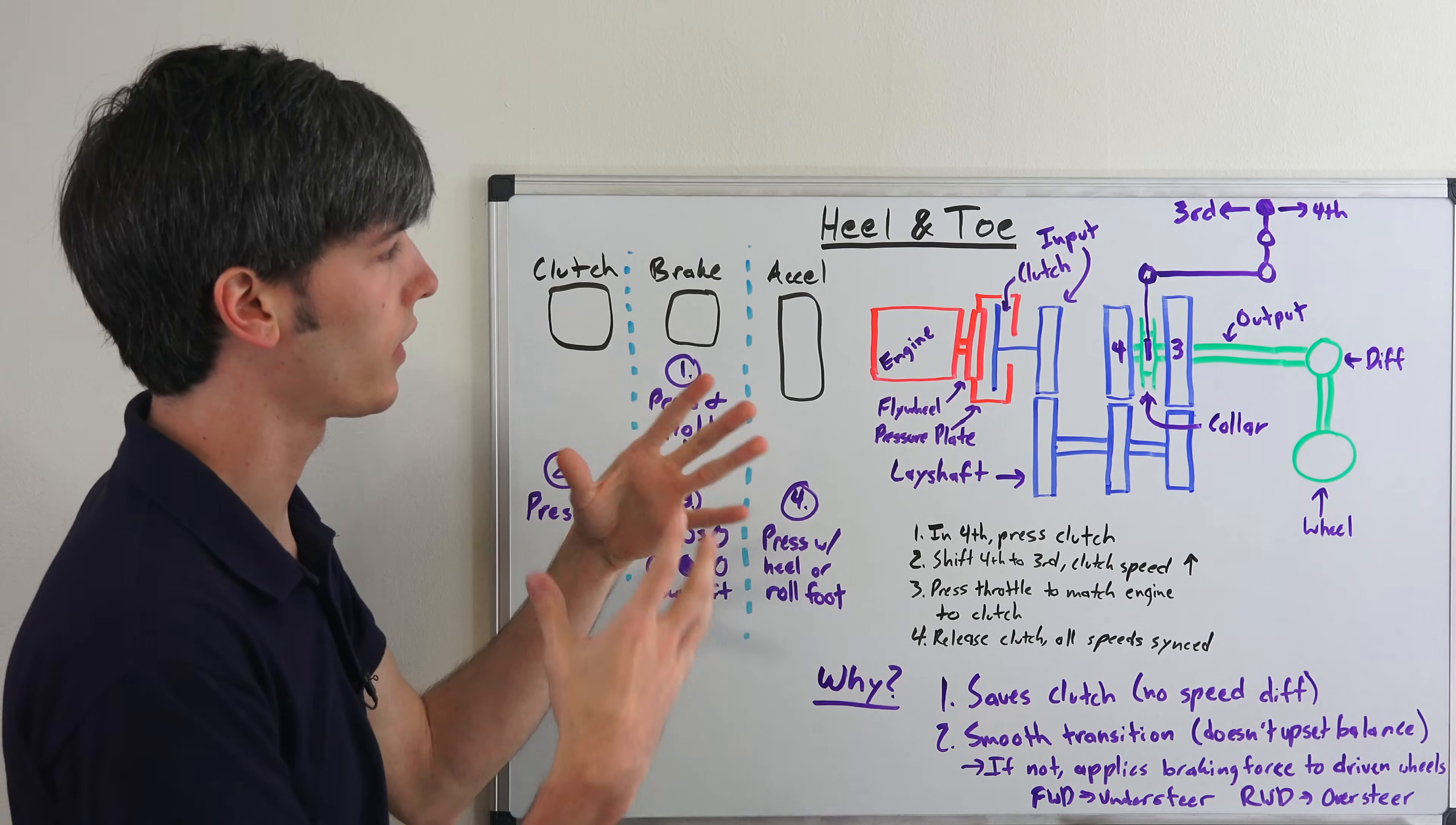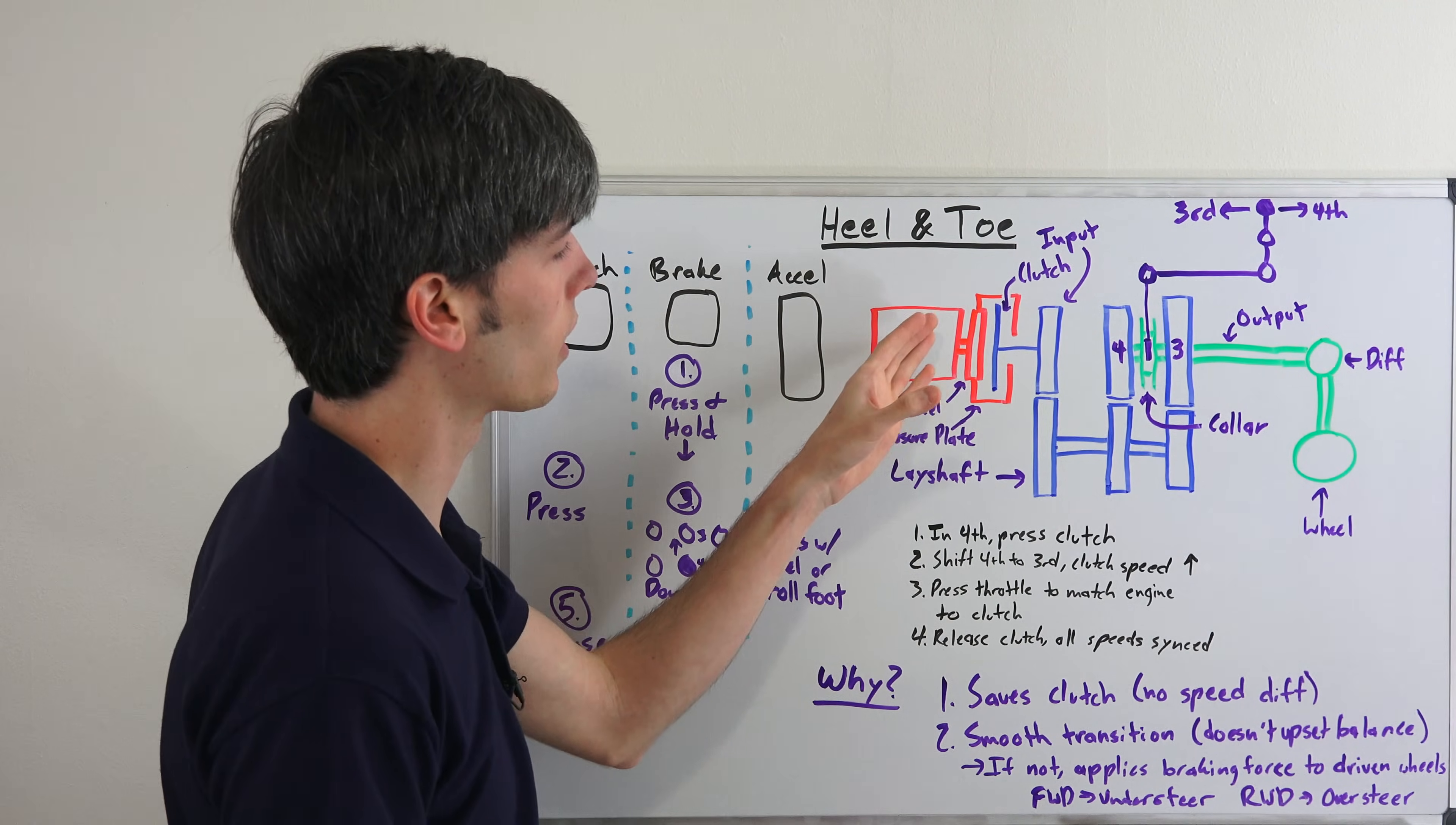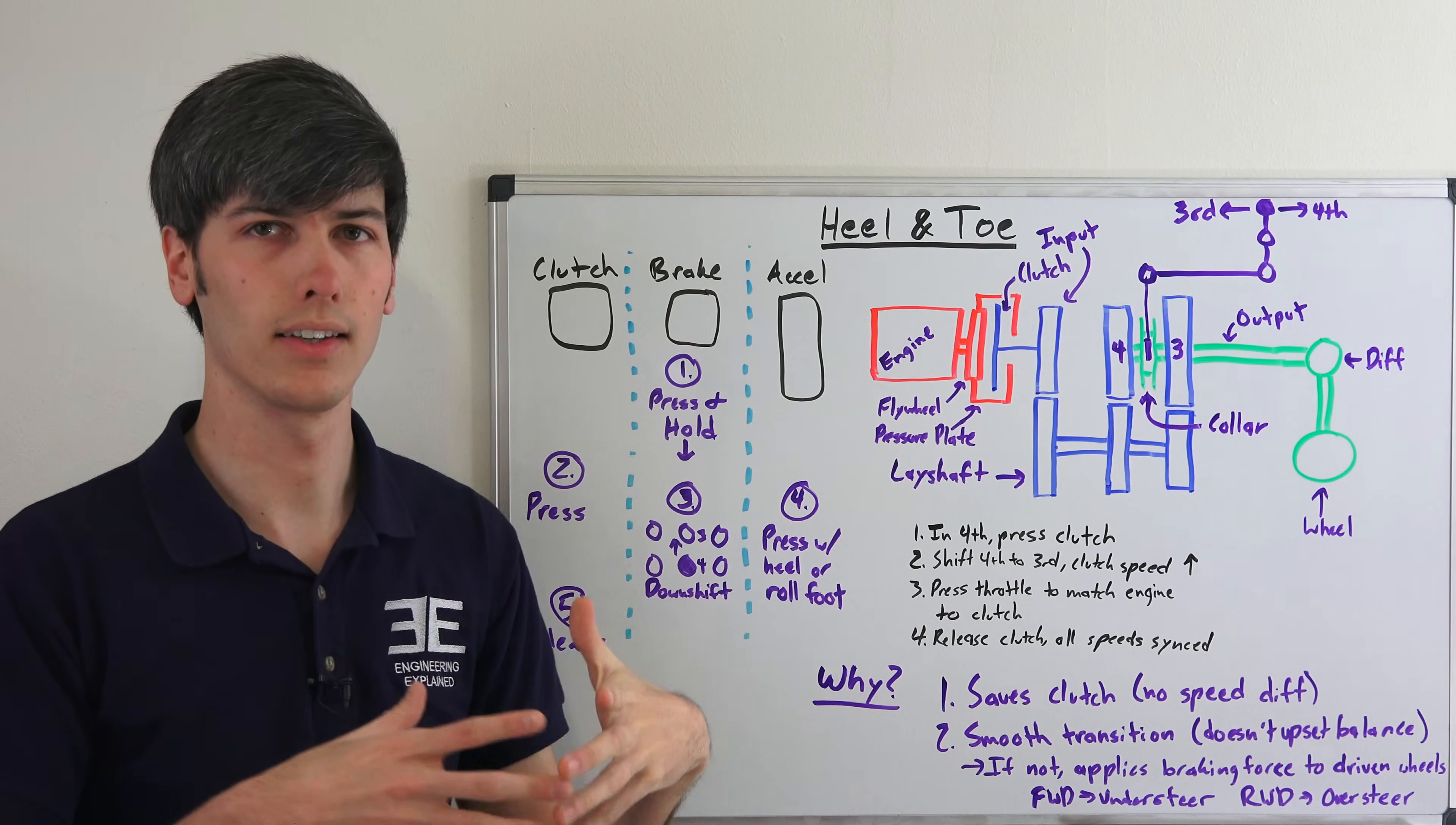So if you were to, let's say you're in a front-wheel drive car and you're coming into a corner and instead of blipping the throttle here, you simply just release the clutch, well then you're going to be placing a braking force which is going to pass to your driven wheels. So if you're in a front-wheel drive car that's going to increase the slip angle of your front wheels and that's going to give you a tendency to understeer.